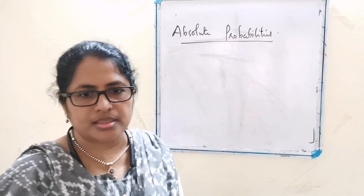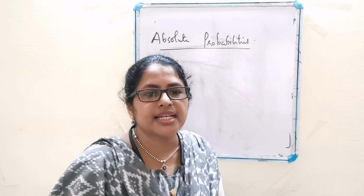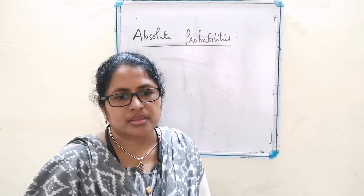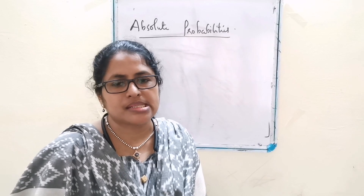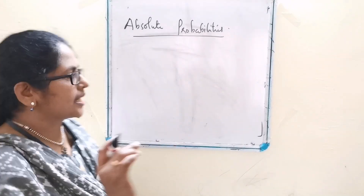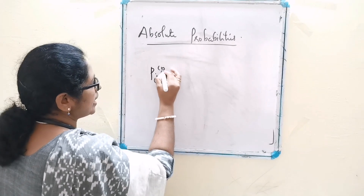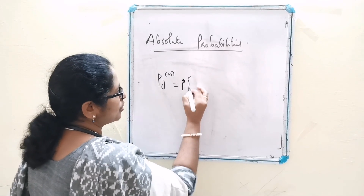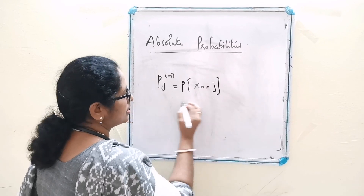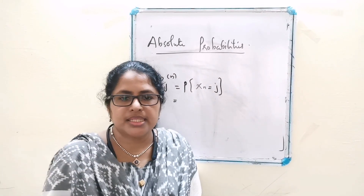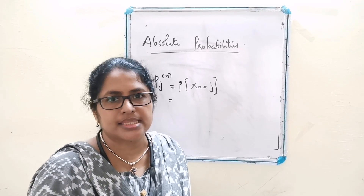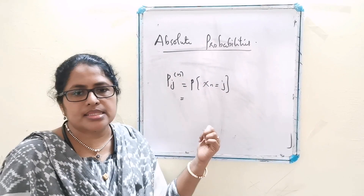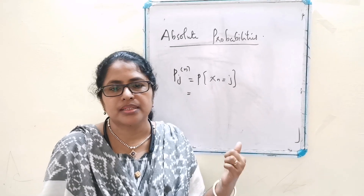Absolute probabilities are unconditional probabilities which describe the transition of the system through different stages. By an N-step absolute probability we mean Pj(N), where Pj(N) is equal to the probability of X(N) equal to j — that is, the probability that the system is at state j after N transitions.